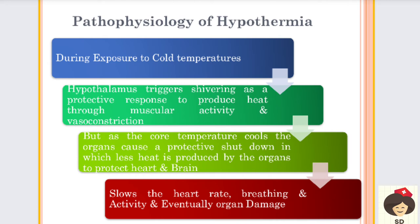Coming to the pathophysiology of hypothermia. When exposed to cold temperature, the hypothalamus will trigger and produce shivering - muscular and voluntary muscle activity - generating energy and producing heat. The hypothalamus also causes vasoconstriction to protect the heat. If the person is still not protected from cold, the core temperature will become very cold and organs will undergo protective shutdown - organs stop metabolism and produce no heat. Peripheral organs stop metabolic activity to protect the heart and brain.